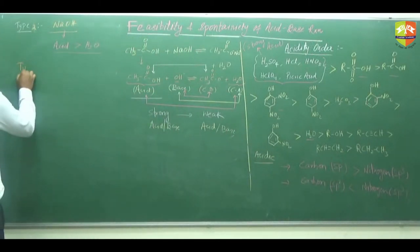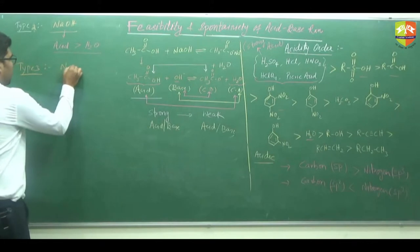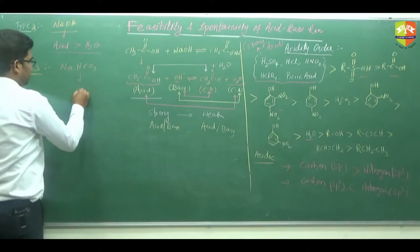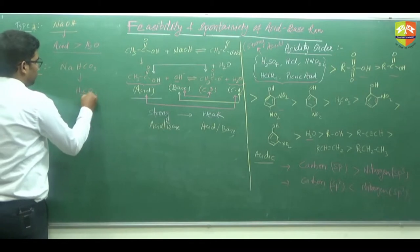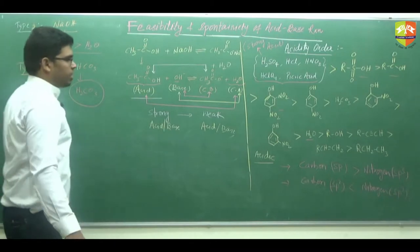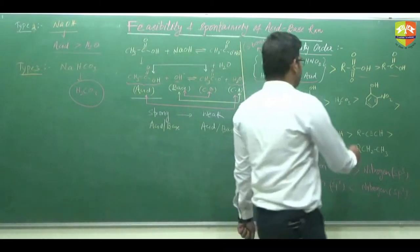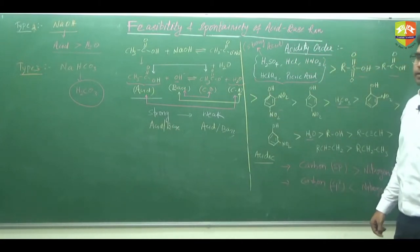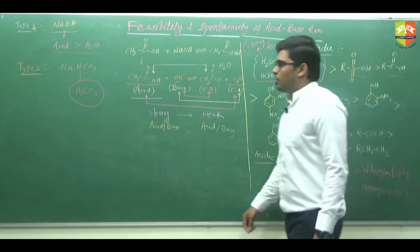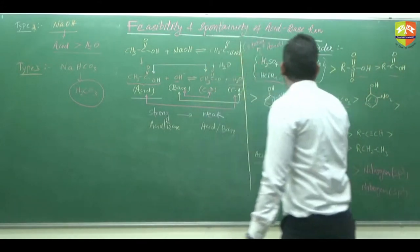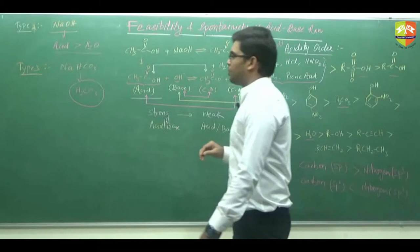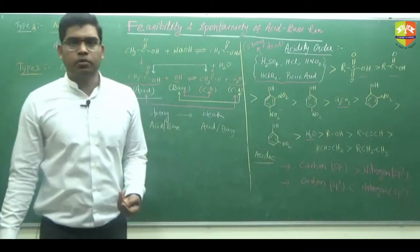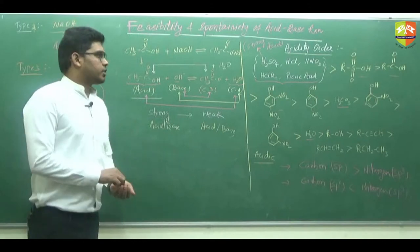Similarly, Type 3 example is NaHCO3. The conjugate acid of NaHCO3 is H2CO3. So all those acids which are stronger than H2CO3 produce H2CO3 on reaction with NaHCO3, and the reaction will proceed in the forward direction.